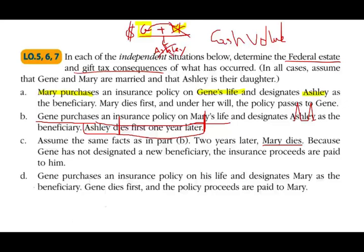Scenario D: Jean the husband purchased an insurance policy on his own life and designated Mary his wife as the beneficiary. Jean dies first and the policy proceeds are paid to Mary. The proceeds are included in Jean's gross estate, but they qualify for a marital deduction — which we discussed in the prior session. So if it's a million dollars, you include a million and deduct a million; the net effect on his estate is zero because of the marital deduction.